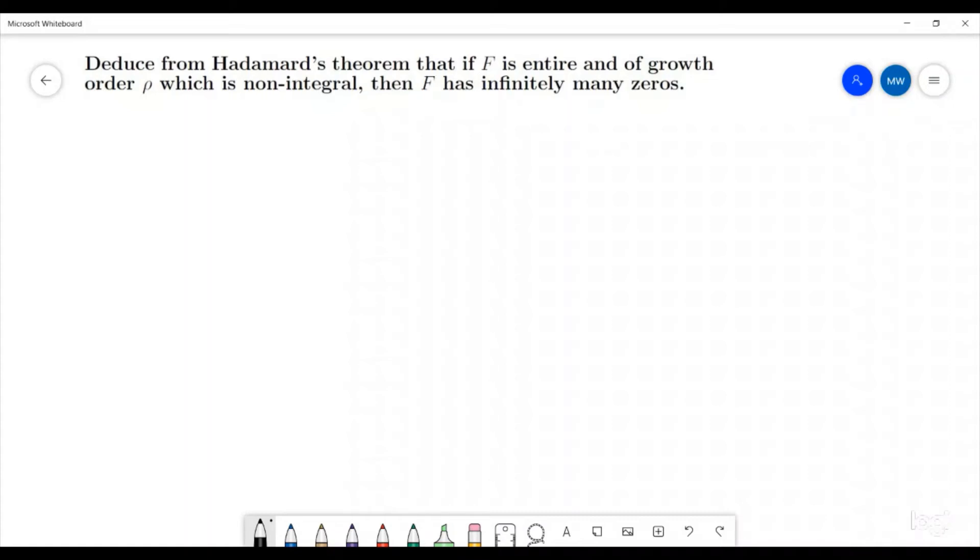Welcome to the Walton Pi. Today we're going to deduce from Hadamard's Theorem that if we have an entire function f, which is of growth order rho, where rho is not an integer, then f must have infinitely many zeros.